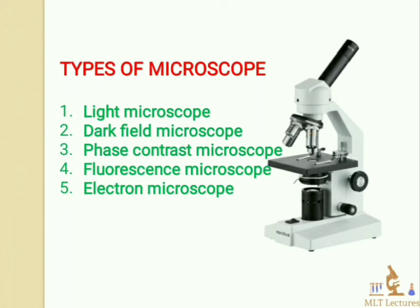The third is the phase contrast microscope, used to study microbial motility and determine the shape of living cells; it also helps in detecting bacterial components such as endospores. The fourth is the fluorescence microscope, which contains a fluorochrome and is used to detect malaria by the QBC method or to detect antibodies and antigens.